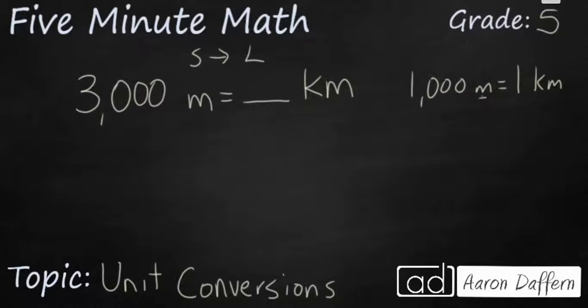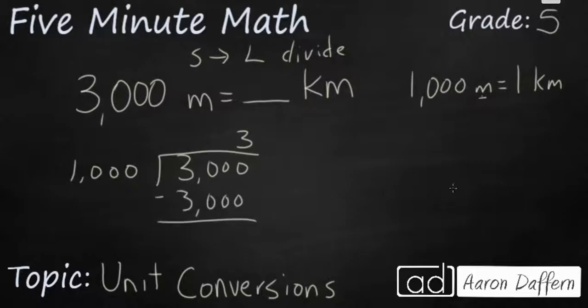Since we are going from small to large instead of using multiplication we are going to divide. We are going to take our 3,000 meters and we're going to divide it into groups of 1,000 because 1,000 meters makes one kilometer. And we need to see how many groups of a thousand we can get in 3,000. The answer is going to be 3. You have 1,000, 2,000, 3,000. So our answer is going to be 3 kilometers.